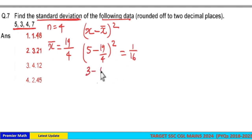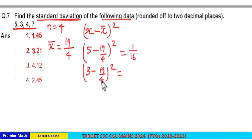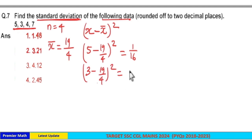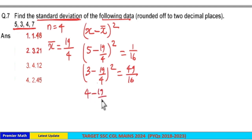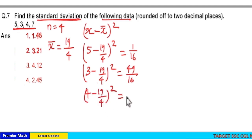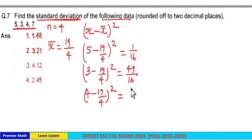For 3: 3 minus 19 by 4, then square it. 3 into 4 is 12, 12 minus 19 is 7, so 7 by 4 squared is equal to 49 by 16. For 4: 4 minus 19 by 4, the whole square. 4 into 4 is 16, 16 minus 19 is 3, so 3 by 4 squared is equal to 9 by 16.